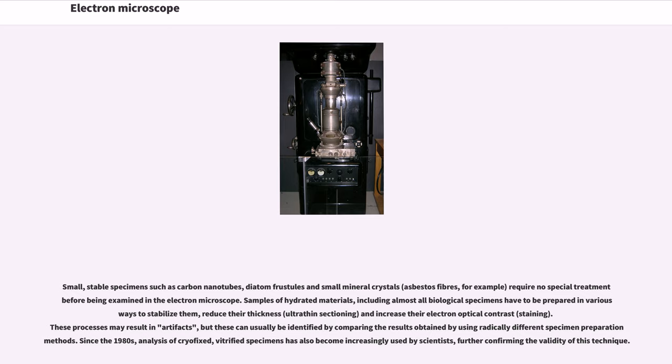Small, stable specimens such as carbon nanotubes, diatom frustules and small mineral crystals, asbestos fibers, for example, require no special treatment before being examined in the electron microscope.